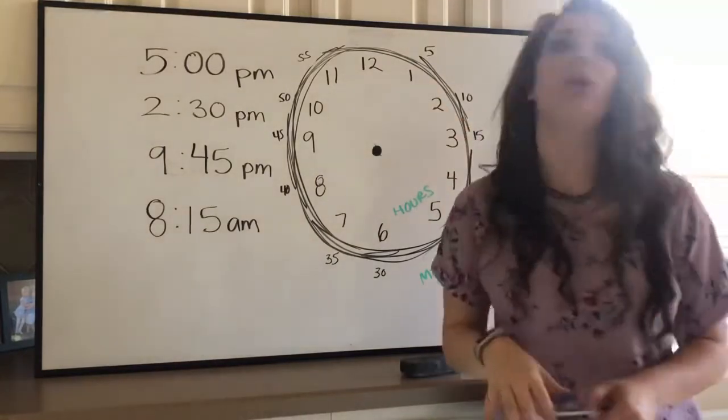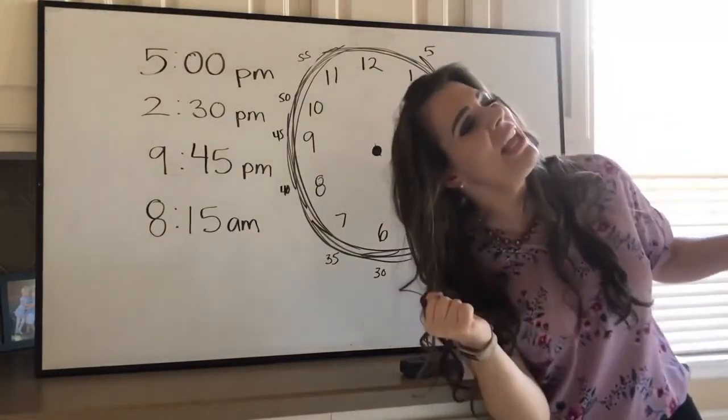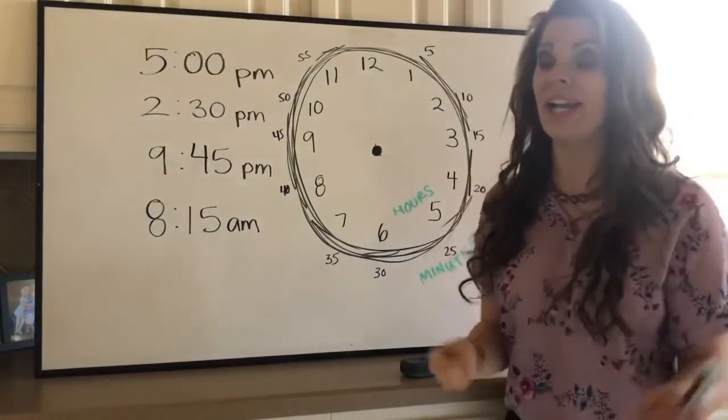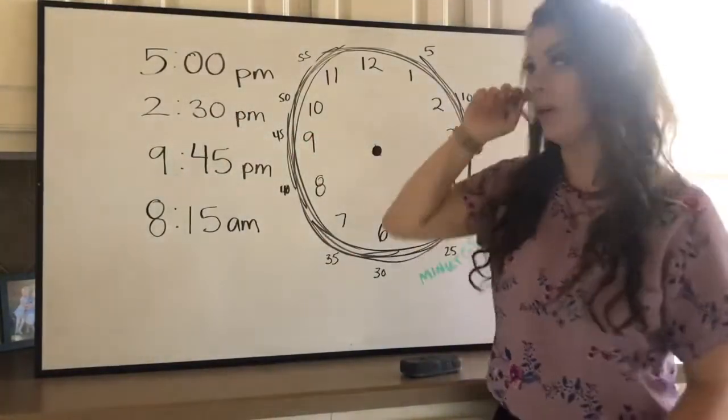All right. Let's try the next one. 2:30, I think that was play time. Yes, let's make sure we get this one right. So we always start with the hours and our small hand first.